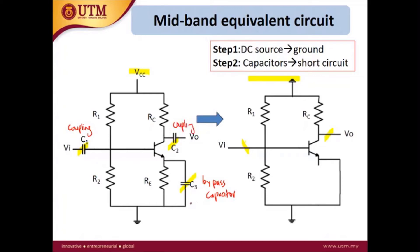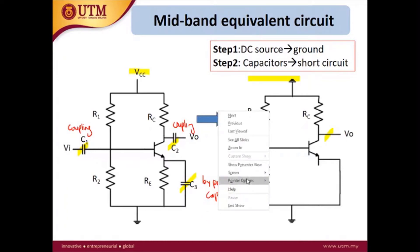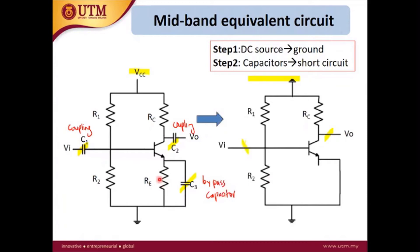The bypass capacitor provides a new current path with less resistance, so most of the current will go through this bypass capacitor. This means there is negligible current across RE, so RE can be removed and seen as an open circuit. That is why there is no RE in this equivalent circuit.